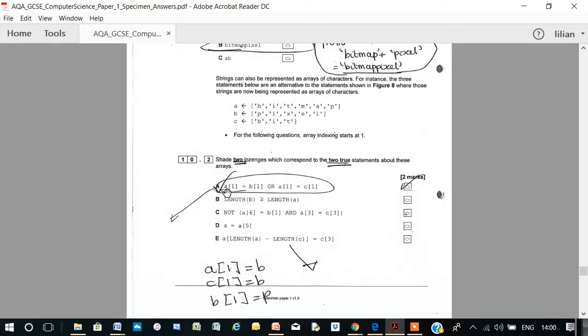So, A1 is equal to B1. It's not true because B is not equal to P. But, or, A1 equals C1, B is equal to B. So, this expression is correct. A is correct or true.